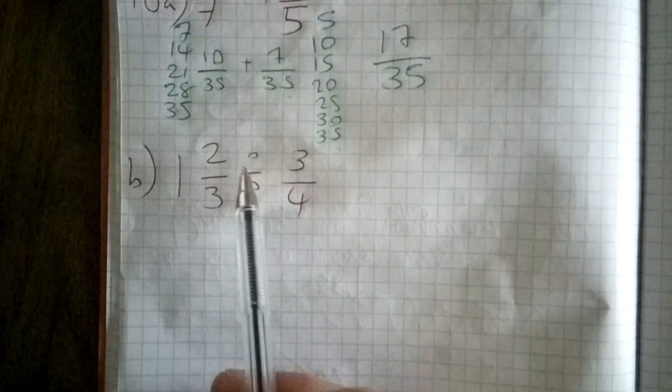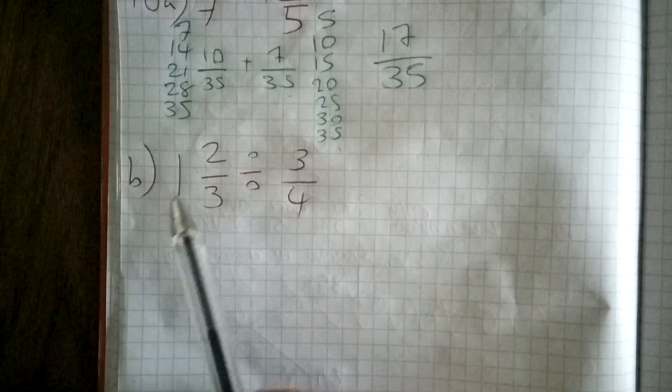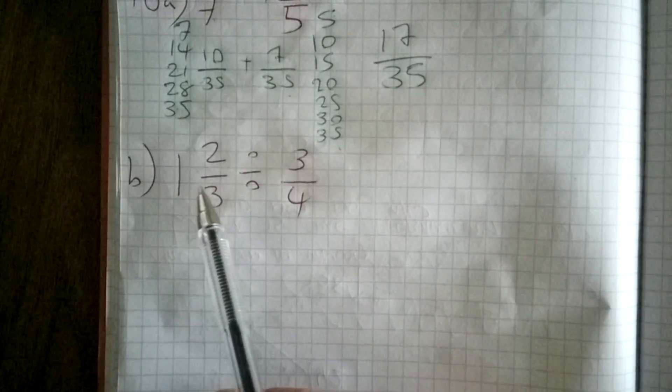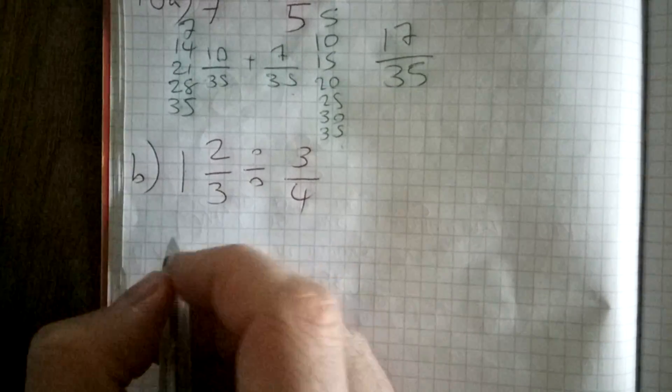Okay, next question: 1 and 2/3 divided by 3/4. Now this 1 and 2/3 confuses us. In every situation, I'll turn it into an improper fraction. If you think of it, you do 1 times 3, which is 3, and add the 2, which is 5, which makes it 5/3.